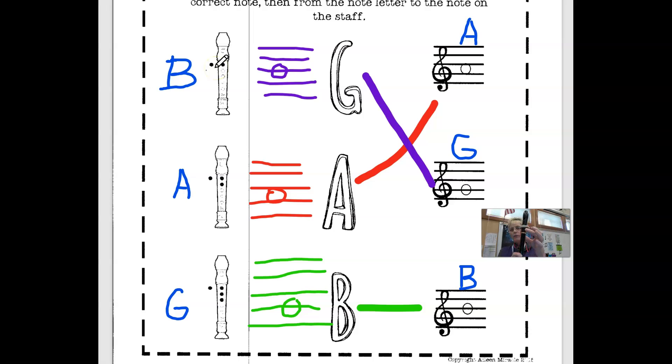So the B is with the first finger and the thumb in the back, and A, you just put down the second finger now, so nothing changes. You still have one and two down, and then you put a finger down.